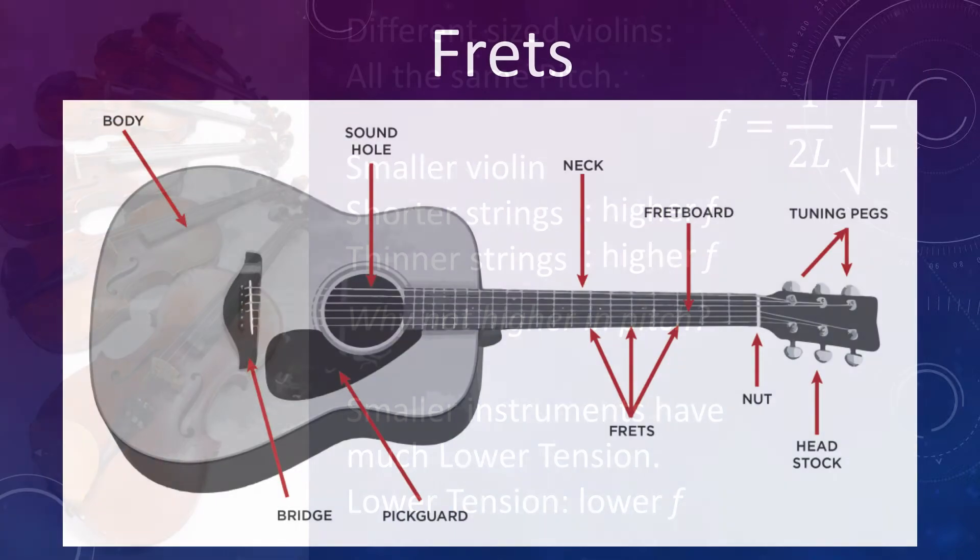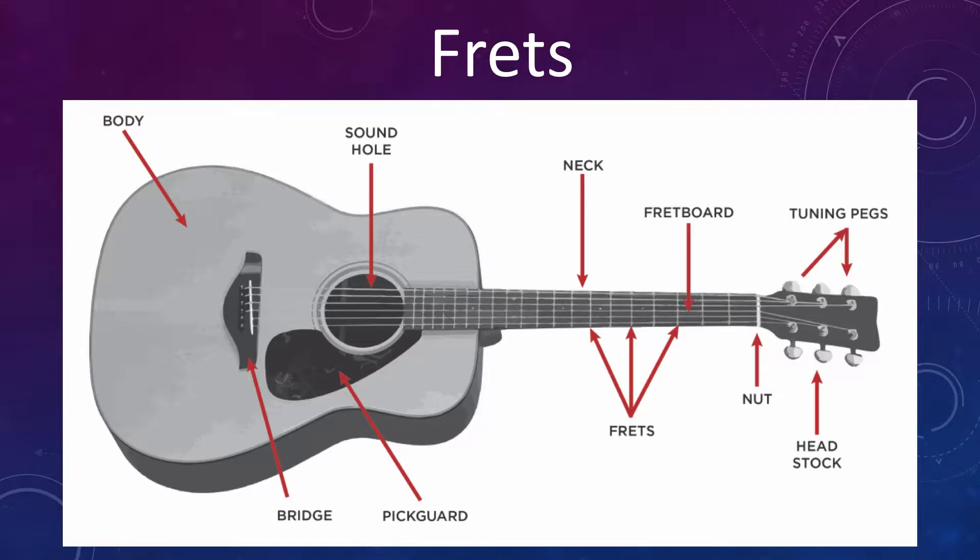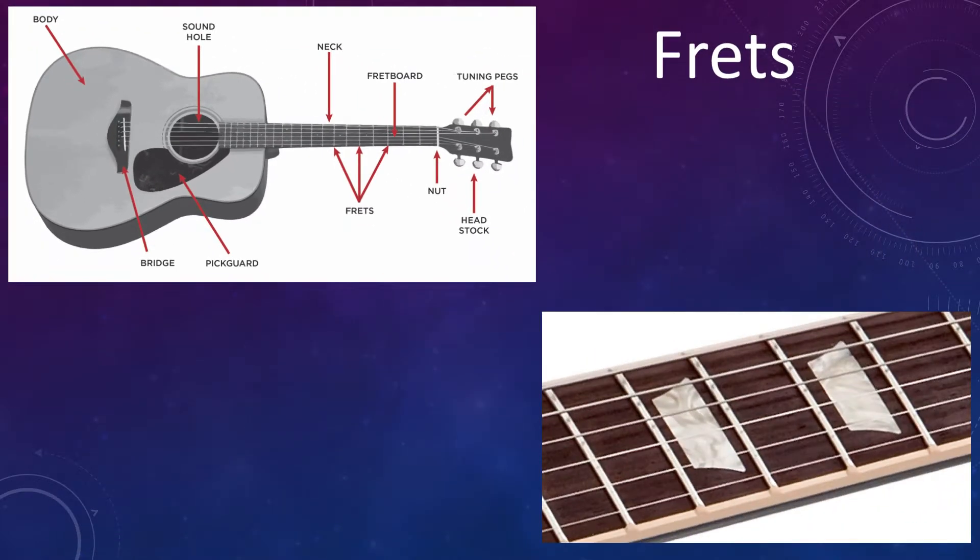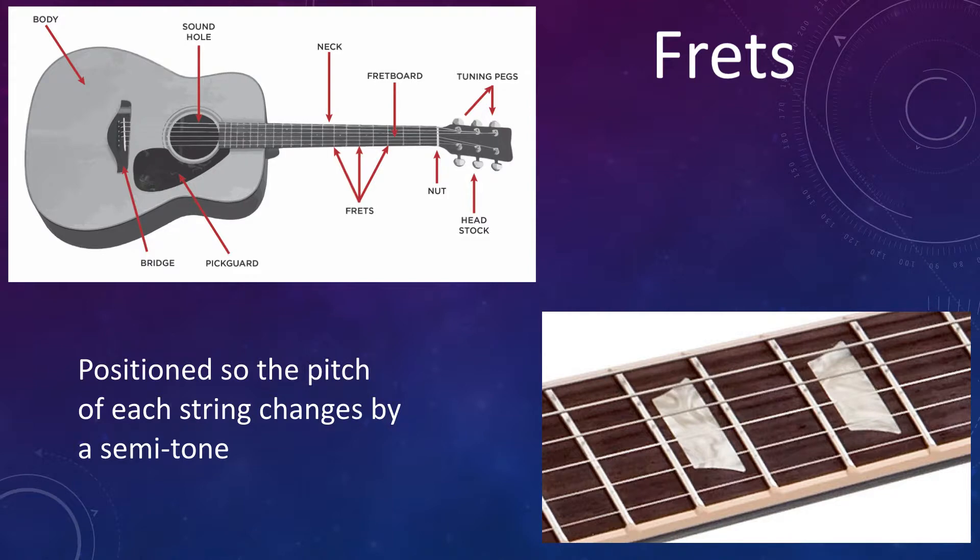Some string instruments, guitars, banjos, ukuleles, and lutes, have frets on the fingerboards. These are small strips of metal positioned so that the pitch of each string changes by a semitone as the fingers go from one fret to the next.